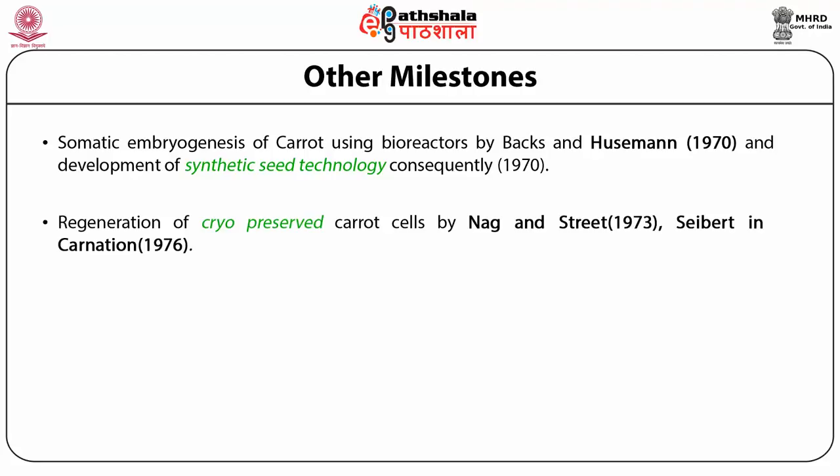The other thing scientists were working on was: can we conserve these cells? We all talk today about biodiversity — why not conserve this biodiversity as cells? Different methods were developed for short-term, medium-term, and long-term storage. Long-term storage was at minus 196 degrees Celsius, and scientists succeeded in regenerating plants from it.